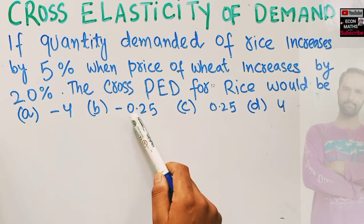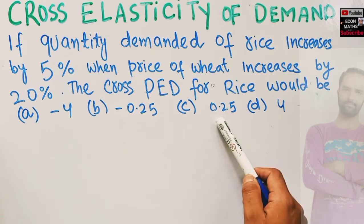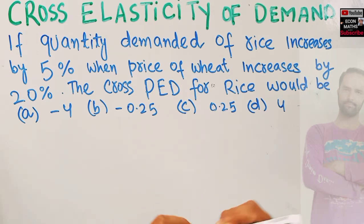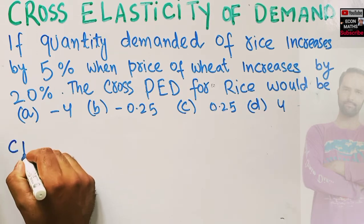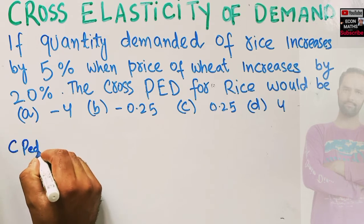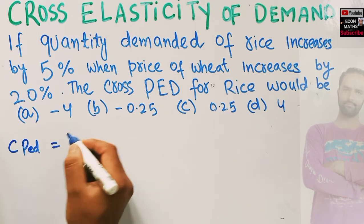The options are: -4, -0.25, 0.25, or 4. So by cross price elasticity of demand, what we mean is simply...